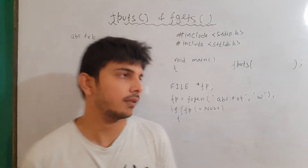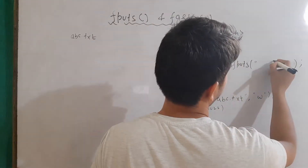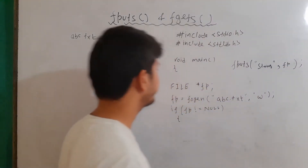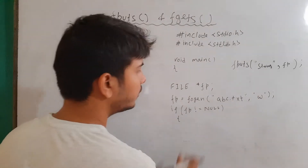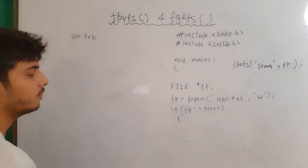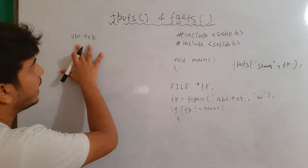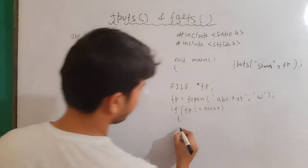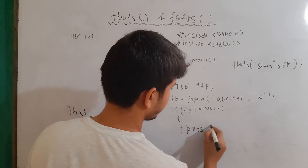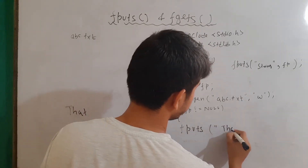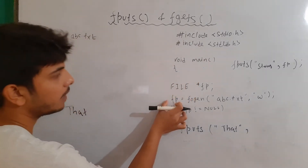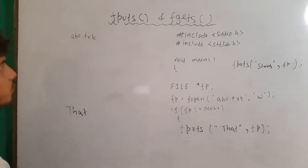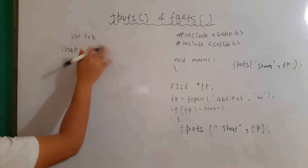First, let's talk about the fputs function. The fputs function takes two arguments: the first is the string, and the other argument is the file pointer. I am opening a file abc.txt with the mode 'w', then checking that the file is opened successfully. I am assuming the file is opened successfully right now.